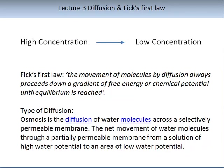The process of diffusion from high concentration to low concentration is explained by Fick's first law. This law states that the movement of molecules by diffusion always proceeds down a gradient of free energy or chemical potential until equilibrium is reached. Osmosis is the diffusion of water molecules across a selectively permeable membrane — the net movement of water molecules through a partially permeable membrane from a solution of high water potential to an area of low water potential.